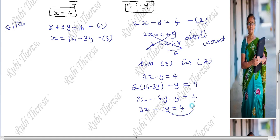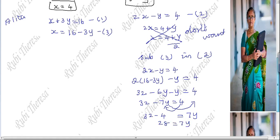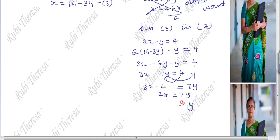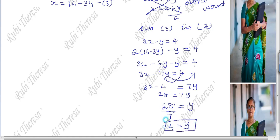Minus 7Y when it comes to the other side becomes plus 7Y. Plus 4 when it comes to this side becomes minus 4. So 32 minus 4 equals 28. So 7Y equal to 28. When 7 comes to the other side, divided by 7. So Y equal to 4.